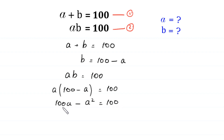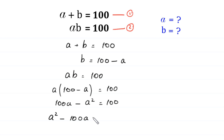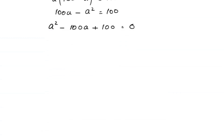We move the terms 100A and negative A squared to the right side. Negative A squared becomes positive A squared, and positive 100A becomes negative 100A, giving A squared minus 100A plus 100 equals 0. This is a quadratic equation and is not factorable, so we solve it by quadratic formula.